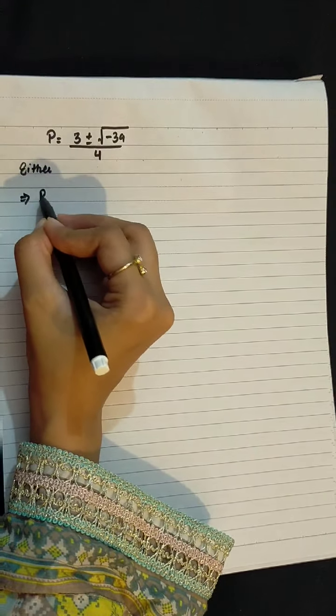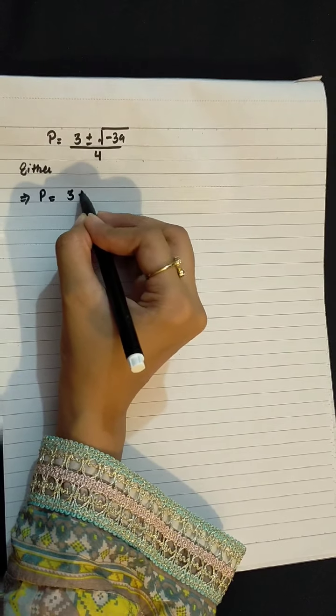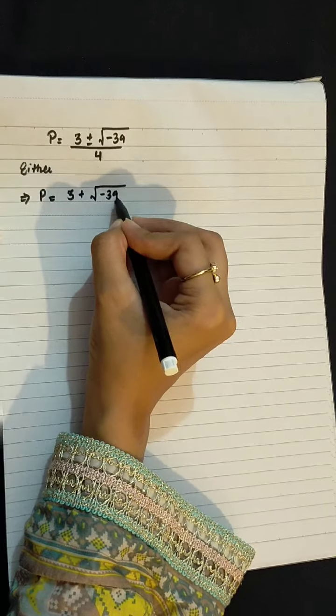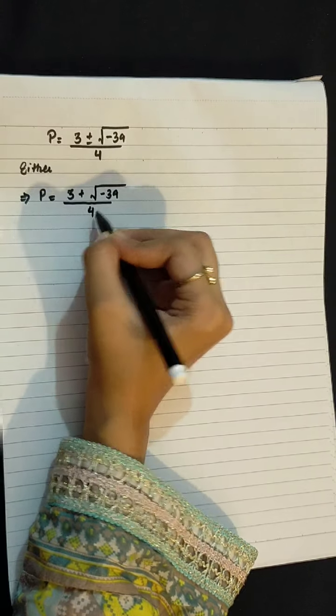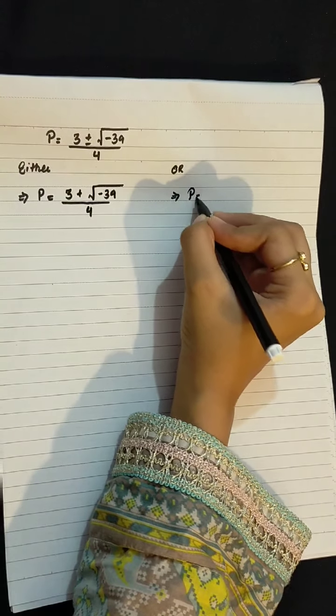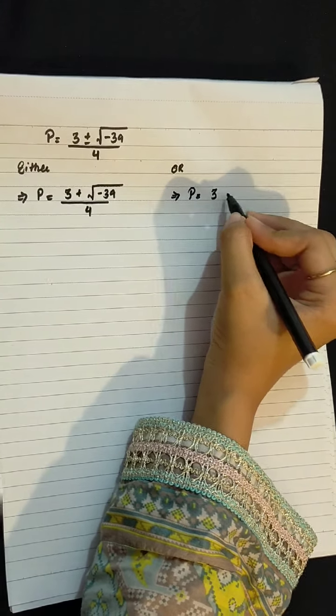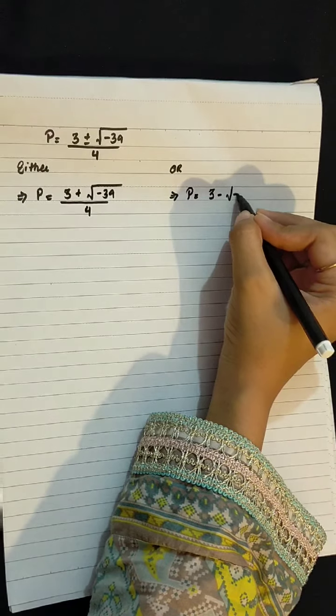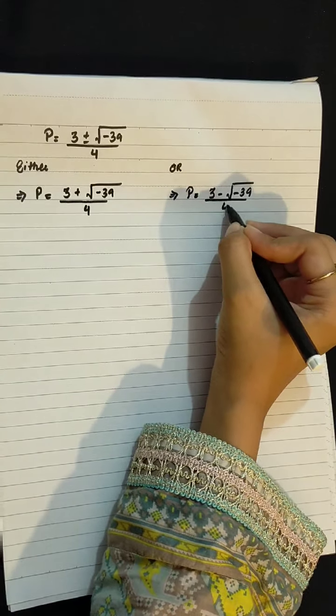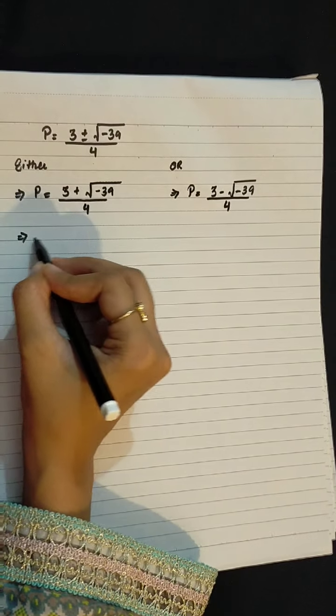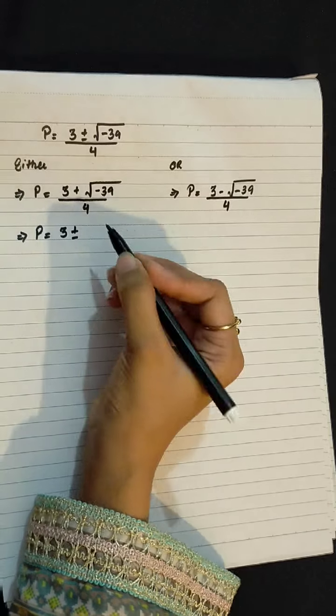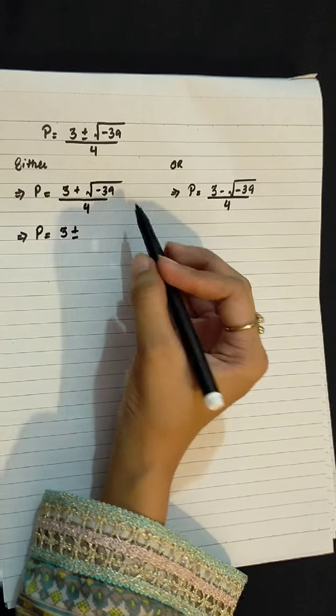Either P = 3 + √-39 / 4, or P = 3 - √-39 / 4.